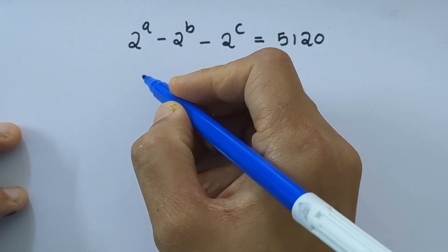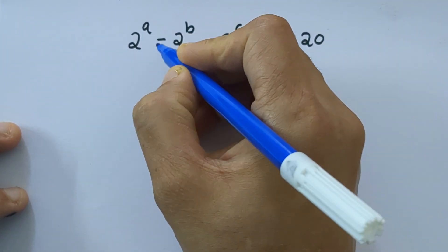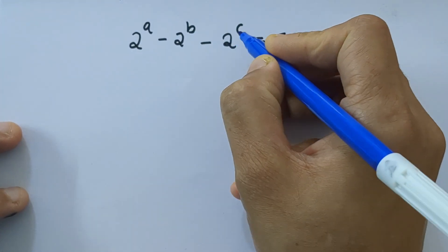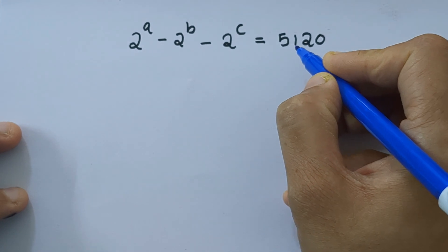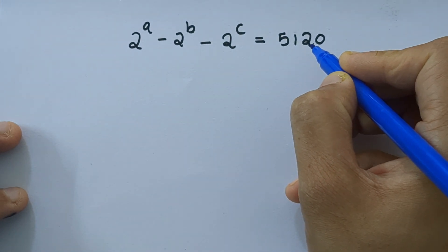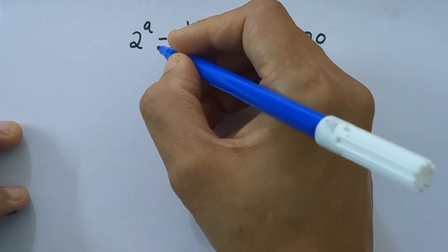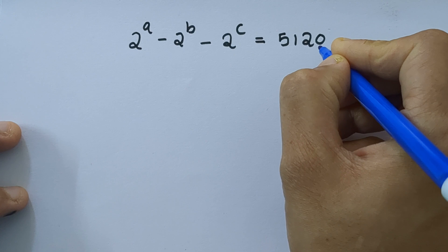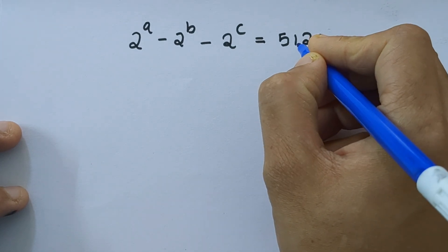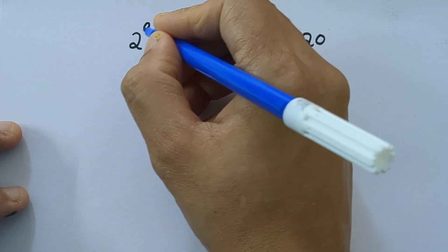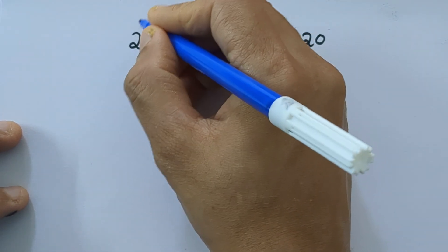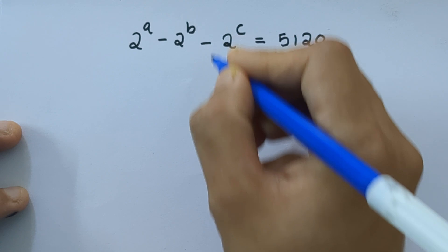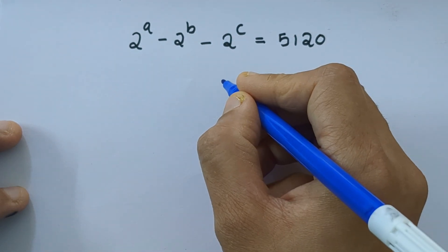Our question is 2 raised to a minus 2 raised to b minus 2 raised to c equals 5120. Here 5120 is positive, which indicates that the exponent a is greater than b and c.